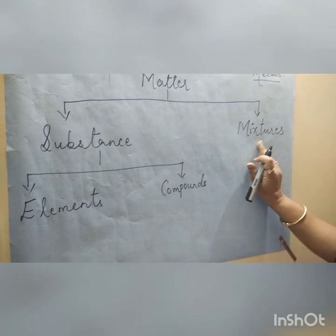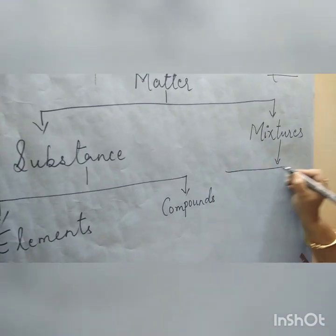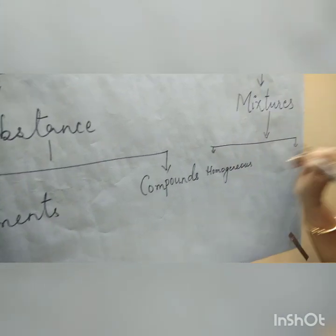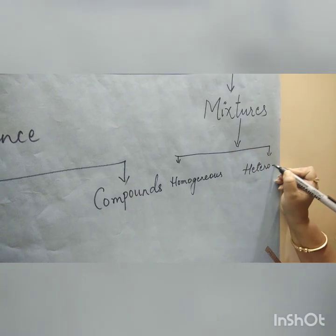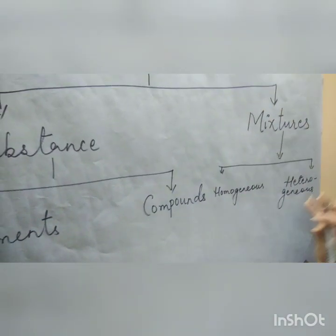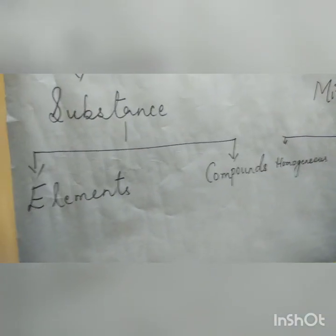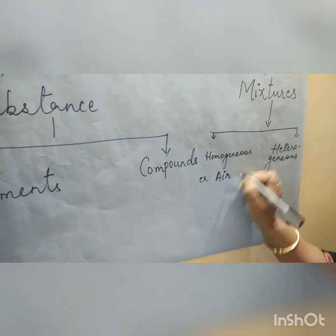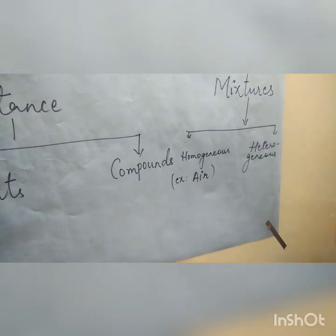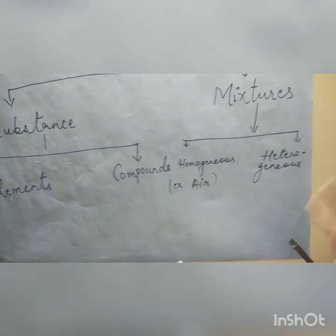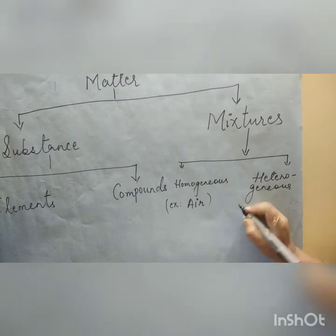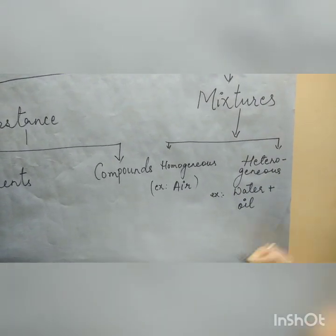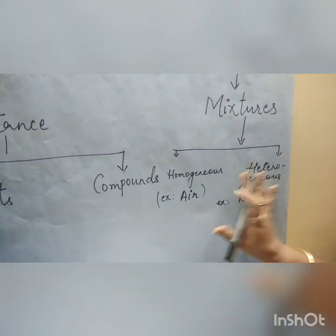Let me complete the schematic diagram for mixtures also. There are two types of mixtures - number one, homogeneous, and number two, heterogeneous. For homogeneous, an example I can take is air; air is a mixture of gases in a certain ratio. For heterogeneous, the proportion or ratio is not equal, that is why they do not mix with each other - an example is water plus oil. But this portion is not required for our standard 8 syllabus.